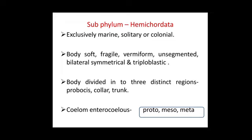The body is soft, fragile, vermiform, unsegmented, bilaterally symmetrical, and triploblastic. Bilateral symmetry means the body is divided from the center into two equal halves — left and right — which are exact mirror images of each other. Triploblastic means three basic germ layers — ectoderm, endoderm, and mesoderm — are present.